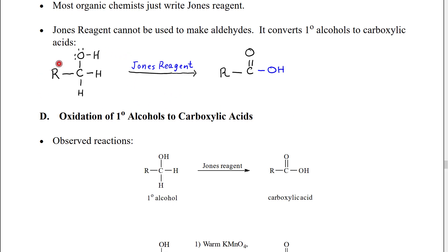If we use Jones reagent to react with a primary alcohol where the alcohol carbon has only one carbon group, unlike PCC we don't get an aldehyde. Instead we do one reaction we make an aldehyde intermediate and then the Jones reagent reacts again with the aldehyde and makes a carboxylic acid instead.